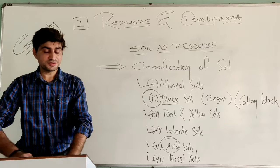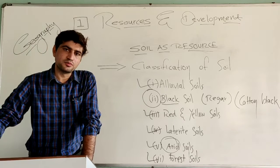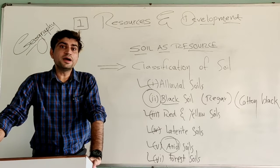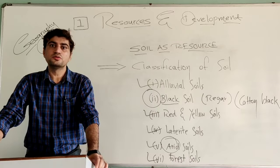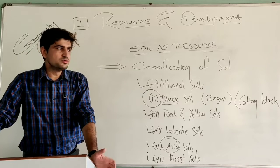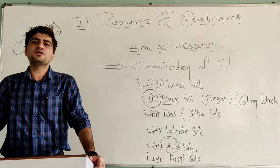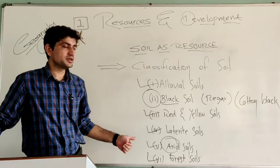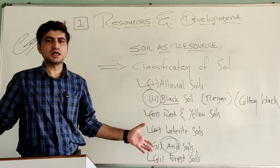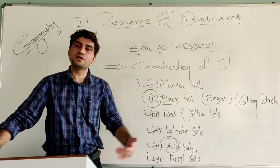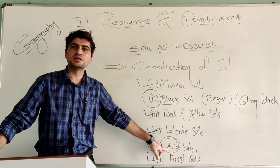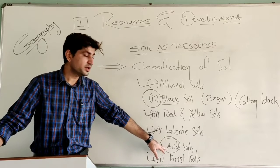Due to dry climate and high temperature, evaporation is faster, and the soil lacks humus and moisture. The lower horizon of the soil contains calcium content deposited by damp water. This soil can be used if given proper treatment — for example, in the western part of Rajasthan, with proper irrigation and fertilizer, this type of soil can be used for cultivation. In some parts of Gujarat and Rajasthan, arid soil is utilized for growing coarse grain crops, but with proper irrigation.